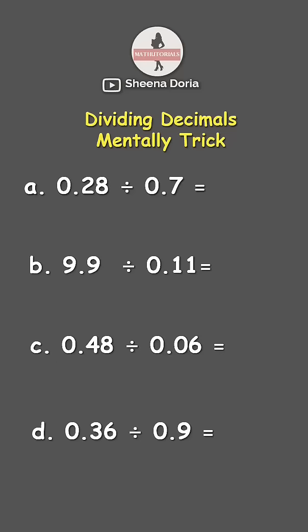Dividing decimals mentally trick. First we got 0.28 divided by 0.7. First thing that you need to do is to make the divisor a whole number. So let's move the decimal point to its right until it becomes a whole number.